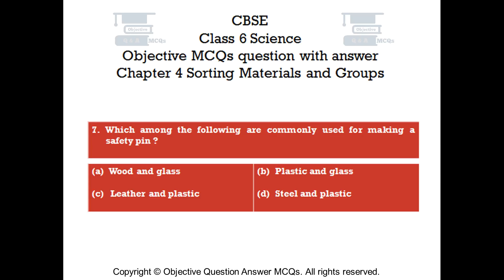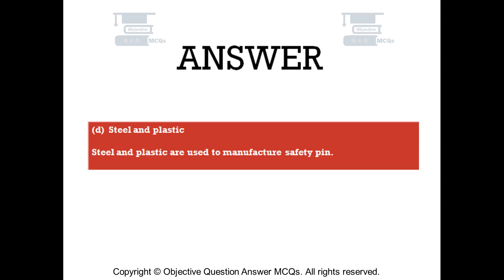Question number 7. Which among the following are commonly used for making a safety pin? Option A: Wood and glass. Option B: Plastic and glass. Option C: Leather and plastic. Option D: Steel and plastic. The right answer is Option D — Steel and plastic. Steel and plastic are used to manufacture a safety pin.